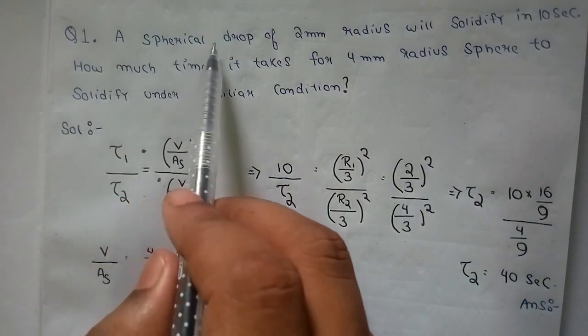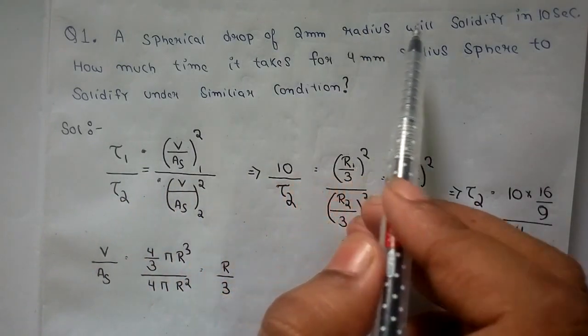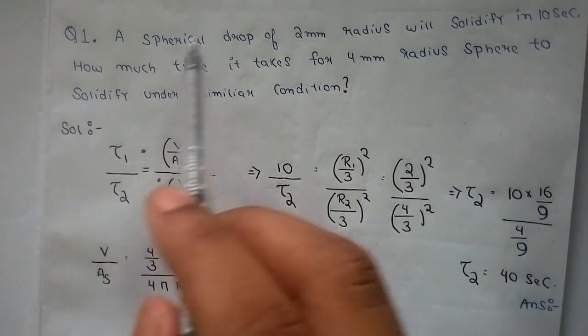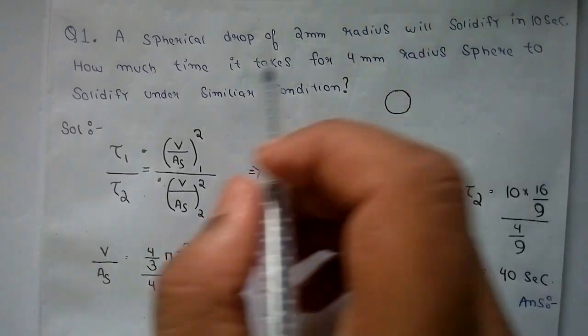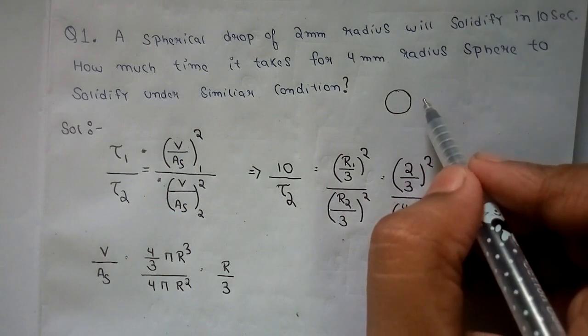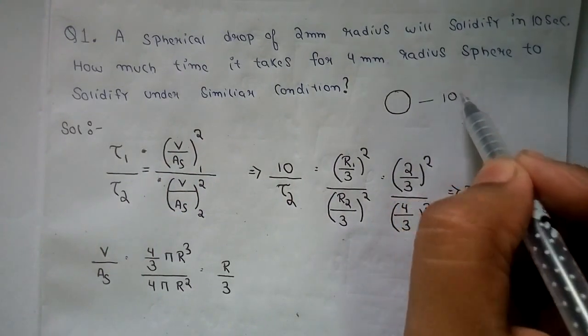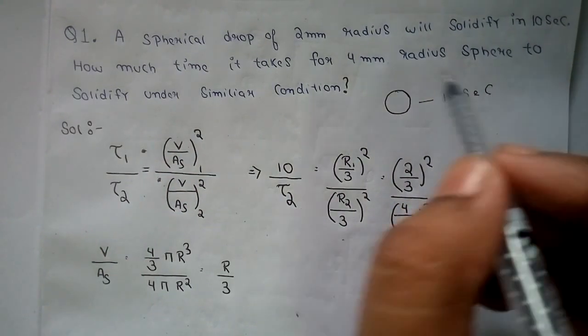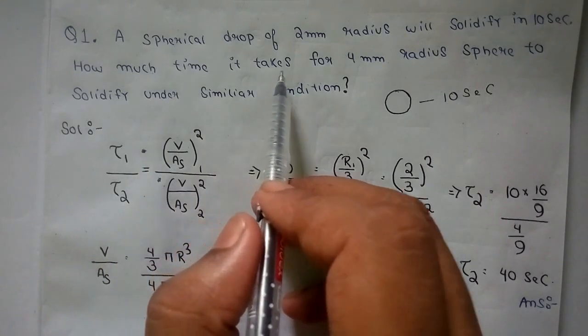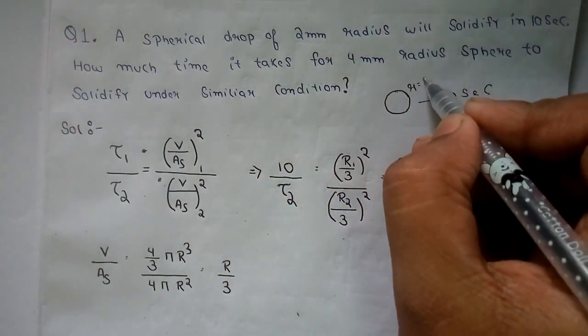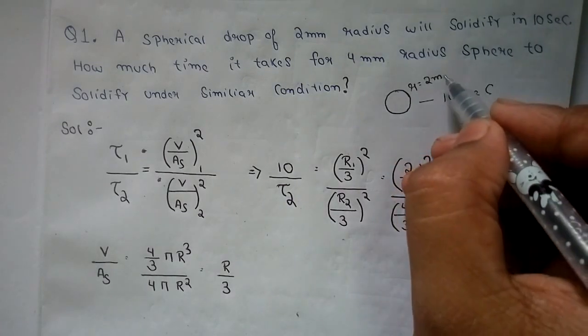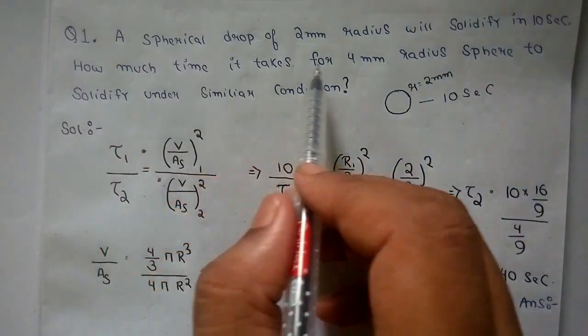Here is our question: a spherical droplet of 2 millimeter radius will solidify in 10 seconds. Suppose this is a 2 mm radius spherical drop which will solidify in 10 seconds.